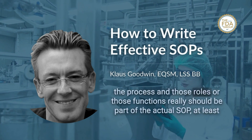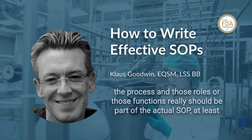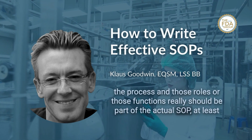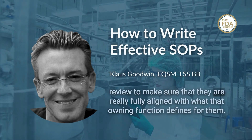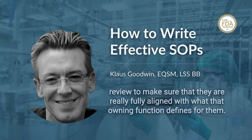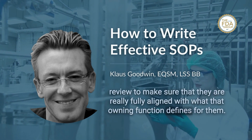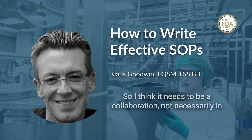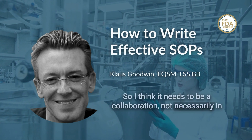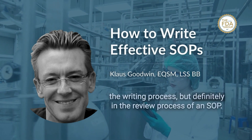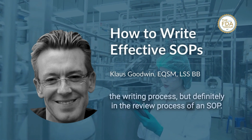You need to be clear who owns the process, and during the scope definition of the SOP, you need to be clear who is part of the process. Those roles or functions should be part of the SOP review at minimum, to ensure they are fully aligned with what the owning function defines for them. It needs to be a collaboration — not necessarily in the writing process, but definitely in the review process.